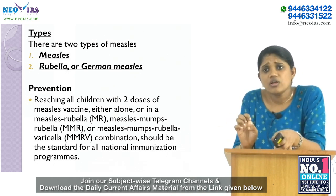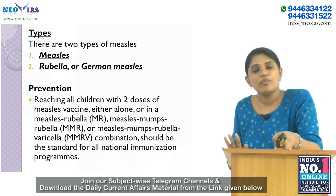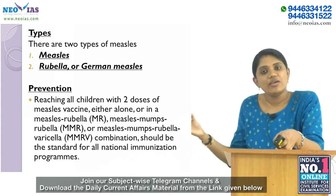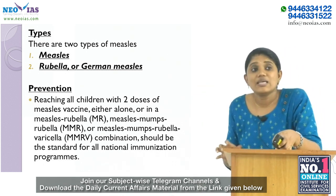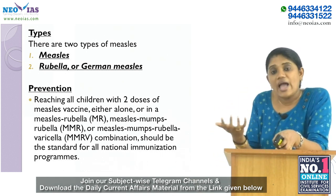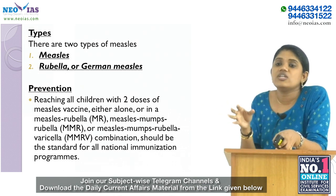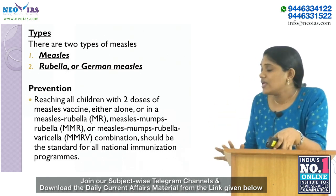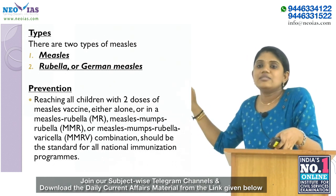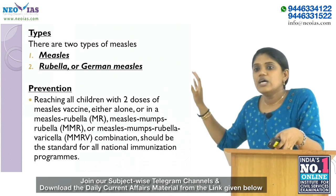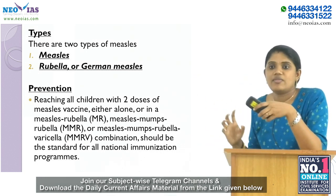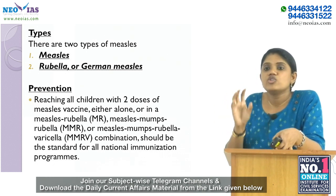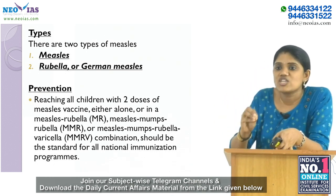For prevention, vaccination is the most important tool. The measles vaccine has been used since the 1960s. WHO recommends immunization for all susceptible children and adults for whom measles vaccination is not contraindicated. Two doses of measles vaccine can be administered alone or in combinations: MR (measles-rubella), MMR (measles-mumps-rubella), or MMRV (measles-mumps-rubella-varicella).